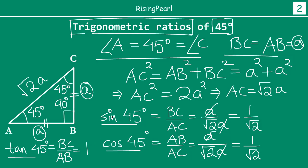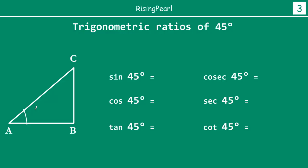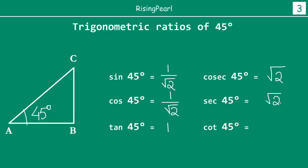So friends, I have now found the trigonometric ratios for sin 45 degrees, cos 45 degrees, and tan 45 degrees. Cosec 45 degrees will be the reciprocal of sin 45 degrees, so it will be square root 2. Sec 45 degrees will be the reciprocal of cos 45 degrees, so that will also be square root 2. And cot 45 degrees will be the reciprocal of tan 45 degrees, which will be 1. To summarize cleanly: sin 45° = 1/√2, cos 45° = 1/√2, tan 45° = 1, cosec 45° = √2, sec 45° = √2, and cot 45° = 1.